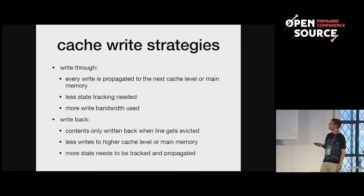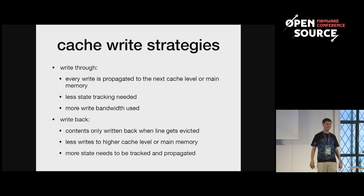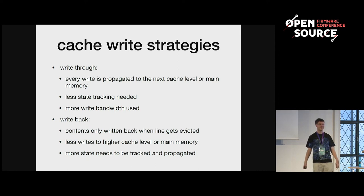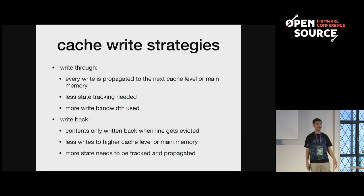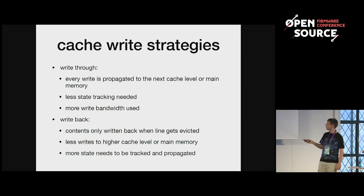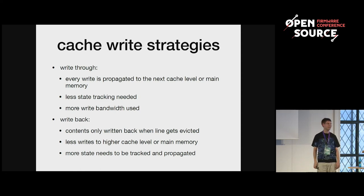There are also different write strategies. Either you can write through — when the processor writes, the write will be propagated from one cache level to another and then to the main memory. The advantage is that you need less state tracking, but the disadvantage is you need much more write bandwidth. The other strategy is write-back, where you only write the cache contents back to the next higher level when it gets evicted from your local cache or invalidated. The downside is that you need to track more internal state — you have to find a compromise.